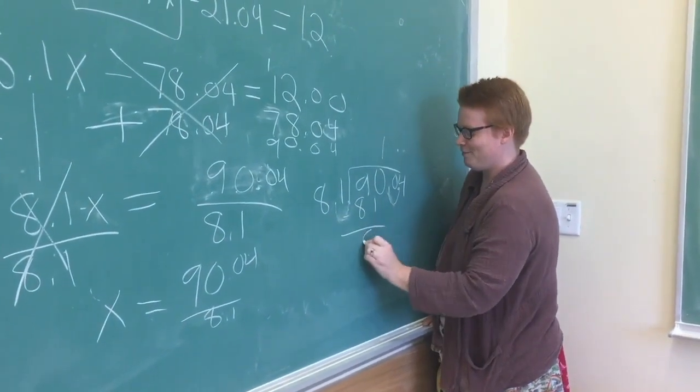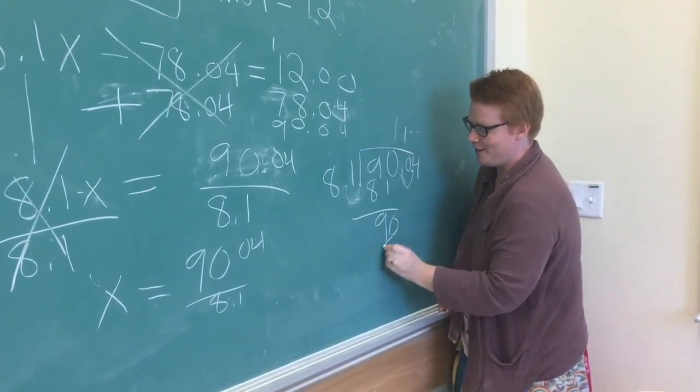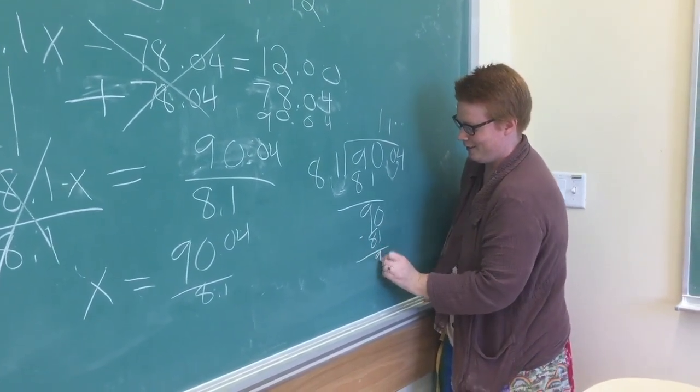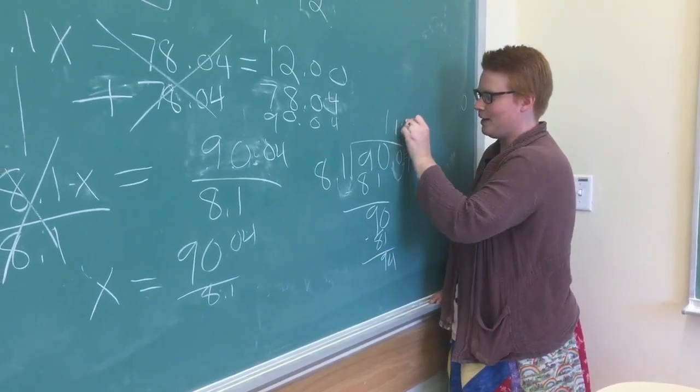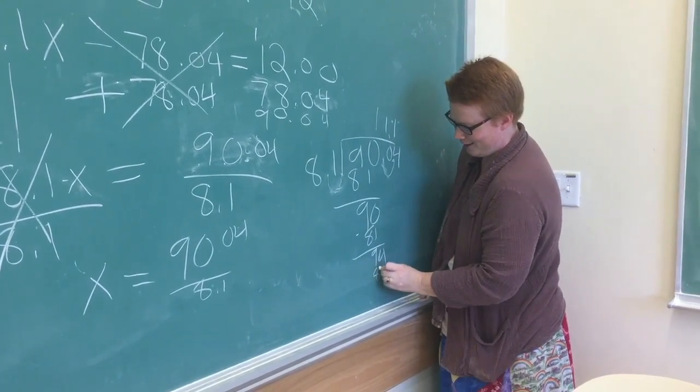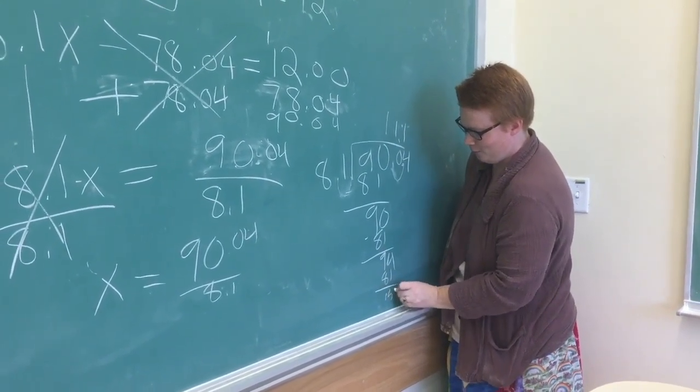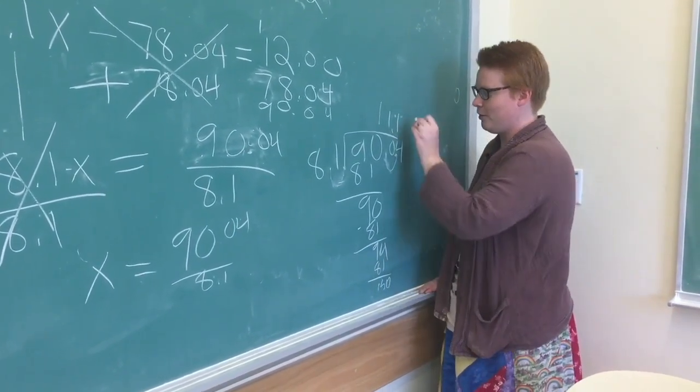Yeah, I know we're out of time. Don't worry. Another once. Bring up the decimal point. One. 130. How many times does 81 go into 130? Once.